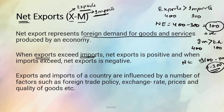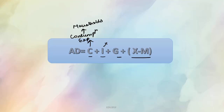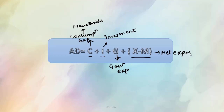Ab hum dekhte hai in components ko mila ke — humne ek equation bana di hai AD ki. What is AD basically? It is C + I + G + (X − M). C was the consumption expenditure jo households kar rahe the, I was investment expenditure, G is government expenditure, and X minus M is net exports. Humne in sab ka aggregate kar liya, sab ka total kar liya — toh humara aggregate demand aa jayega.